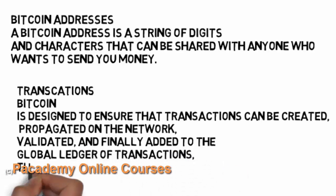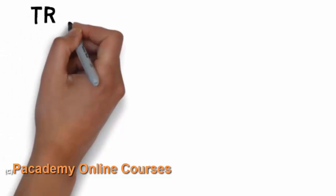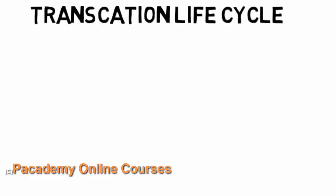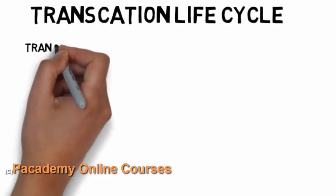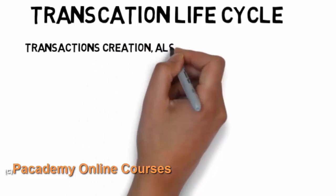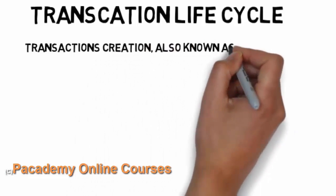Bitcoin is designed to ensure that transactions can be created, propagated on the network, and validated. Once a transaction is created it is transferred through all the active nodes on the network, and it has to be added to the general ledger once it is validated. Every transaction created between two parties on the Bitcoin network has to be validated by the nodes or peers on the network, and once validation happens it is added to a ledger known as the blockchain.